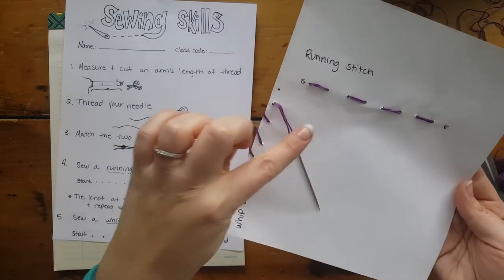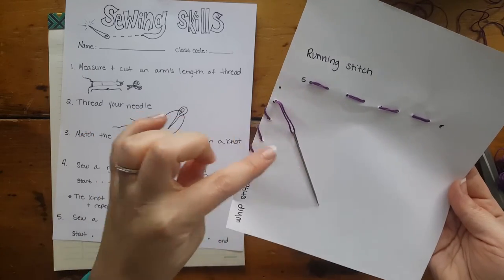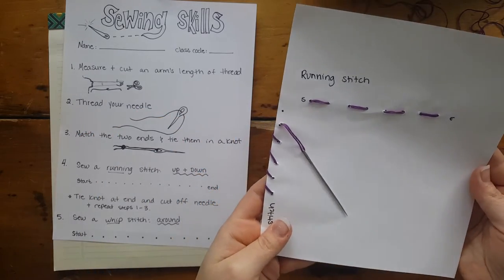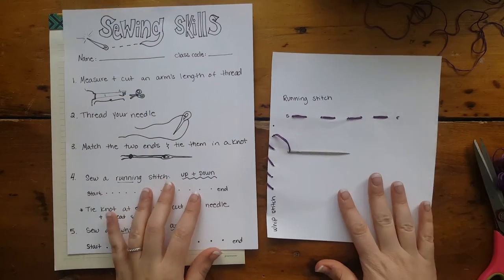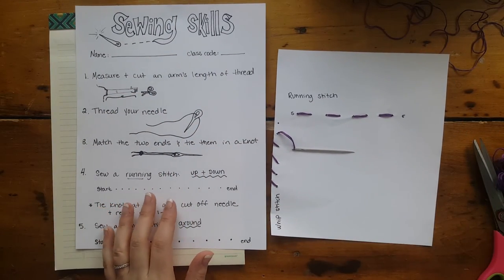So you will cut, tie a knot, and return the needle. On this sewing skills sheet, make sure your name and your code is on it, and then just turn it in to me when you're finished. Thank you.